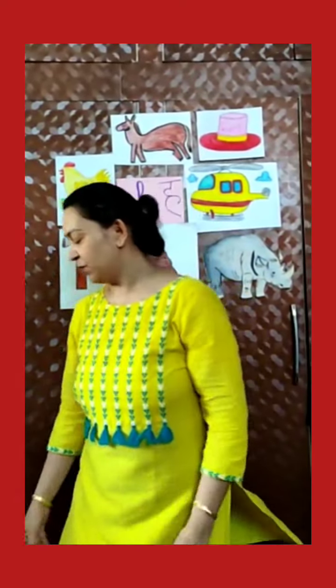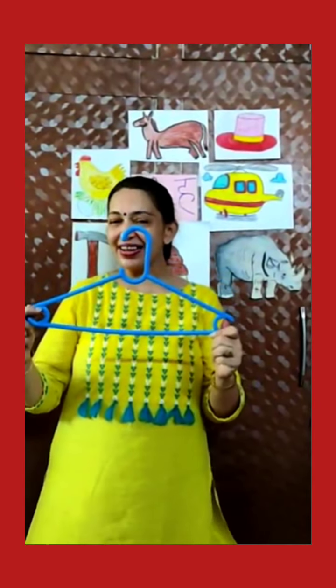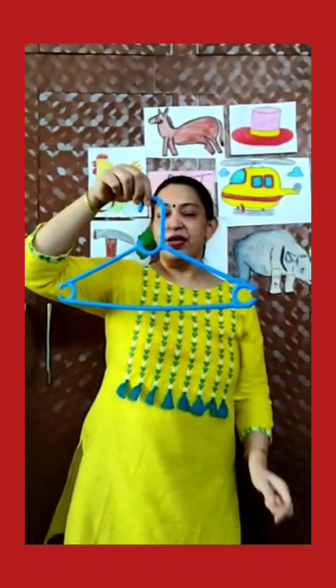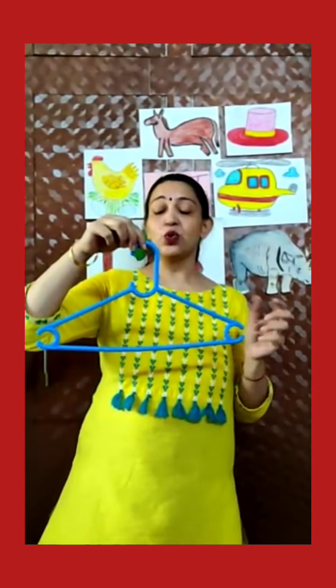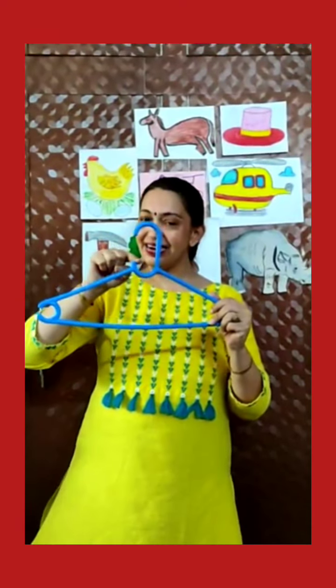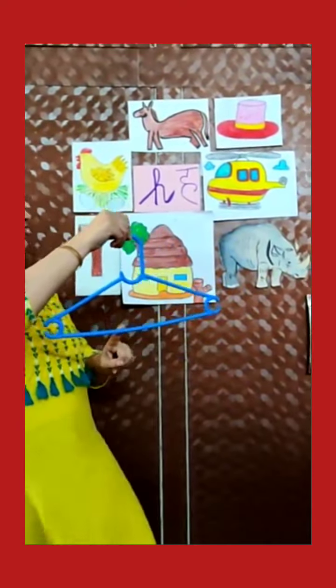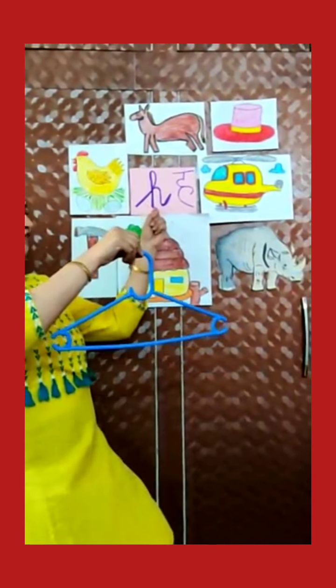H for head. H for hair. This is my hair. And I will show one more thing with letter H. Mama hangs the clothes on the hanger. Hanger is made with plastic, wood, and metal. It has one hook. You can hang clothes on the hanger. H for hanger.